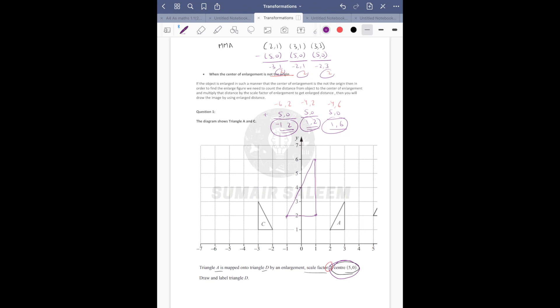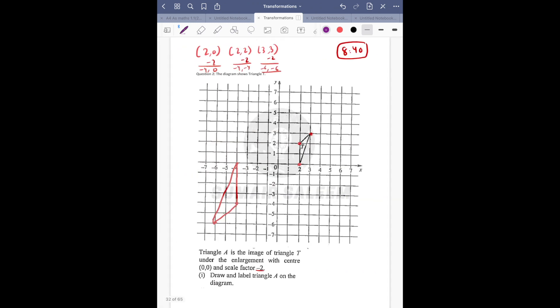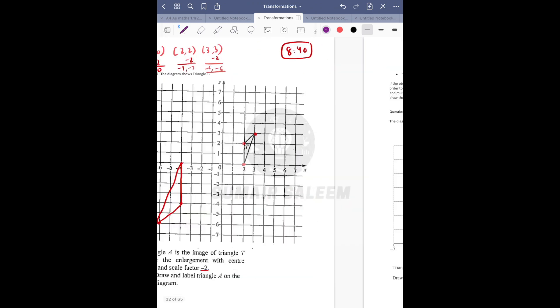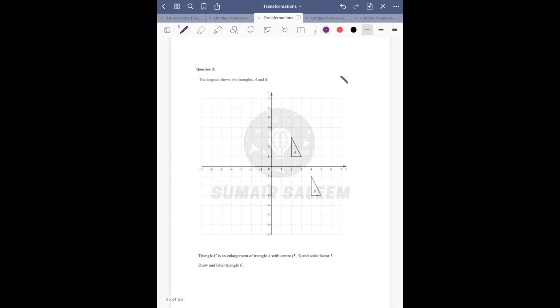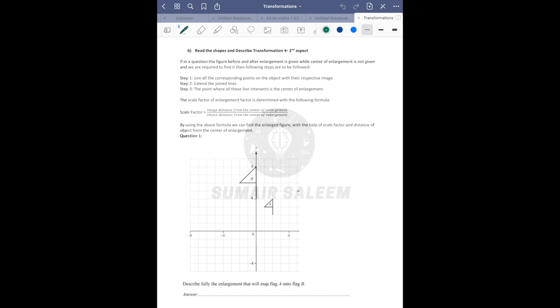Did you all get till this point guys? This was drawing the image - the question either gives center 0,0 or some other center. Apply minus, multiply, add rule and the image is formed.